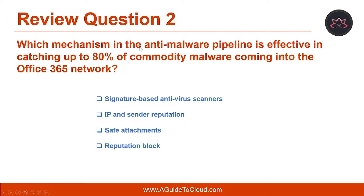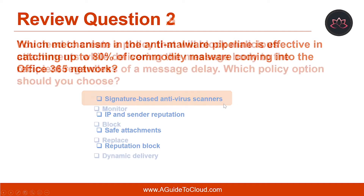Let's look at question number two. Which mechanism in the anti-malware pipeline is effective in catching up to 80% of commodity malware coming into the Office 365 network? The correct answer is signature-based anti-virus scanners.